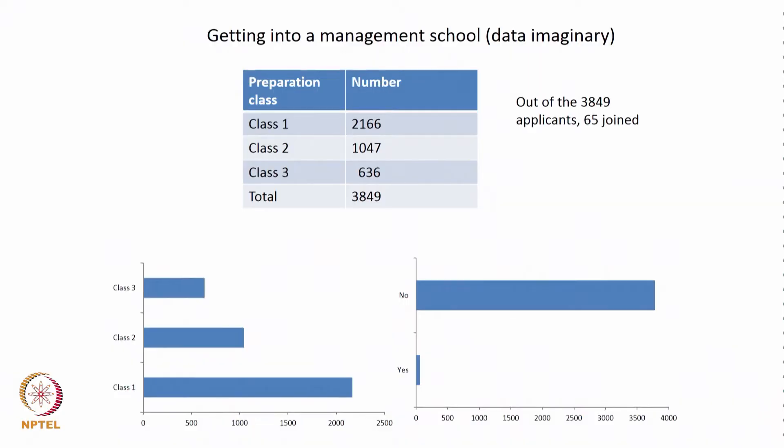In this lecture we discuss conditional probability. In an earlier lecture when we were discussing statistics, we looked at categorical variables and discussed the case of admission to a program through different training classes. We take the same example and convert the proportions into probabilities to understand the concepts in conditional probability.